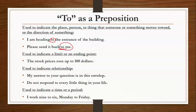Use to indicate a limit or an ending point. जब भी हमें किसी चीज की limit बतानी होती है, किसी extent तक बताना होता है, तब भी हम 'to' का use कर सकते हैं। Example: 'The stock prices rose up to $100' — जो stock के prices थे वो $100 तक बड़े — इसलिए हमने यहाँ 'to' का use किया है।